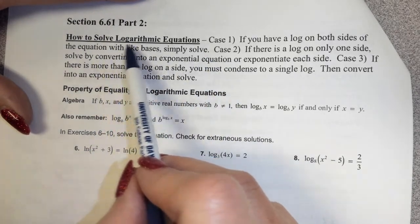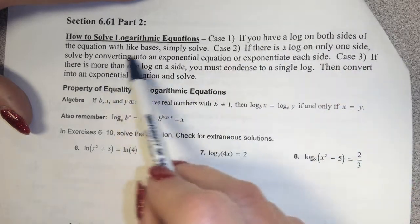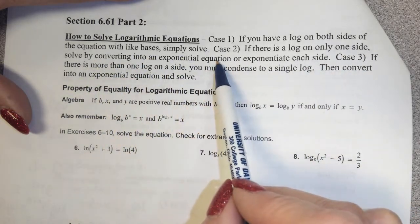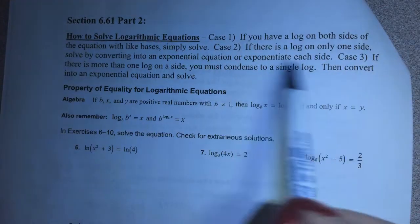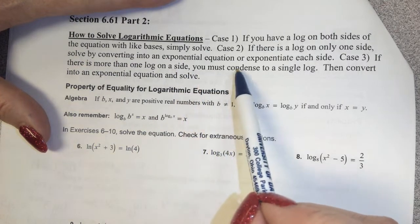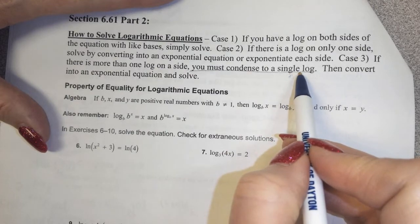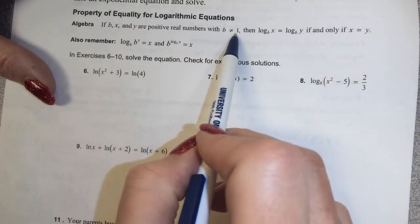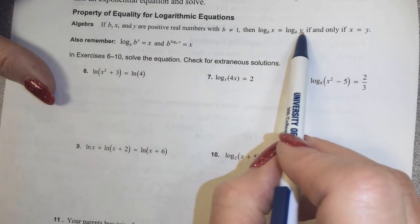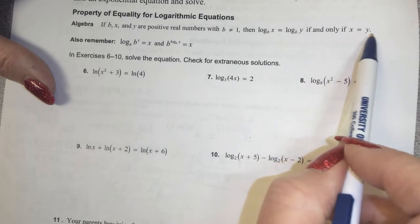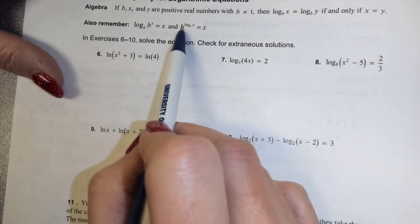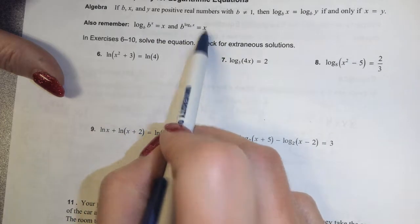Now we move to solving logarithmic equations. If you have a log on both sides with like bases, simply solve. If there's a log on only one side, solve by converting to an exponential equation or by exponentiating each side. If there's more than one log on a side, you must condense to a single log first, then convert to an exponential equation and solve. Key property: log base b of x equals log base b of y if and only if x equals y. Also remember: log base b of b to the x is just x, and b to the log base b of x is also just x.